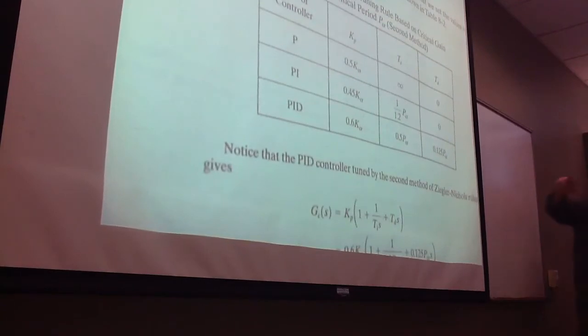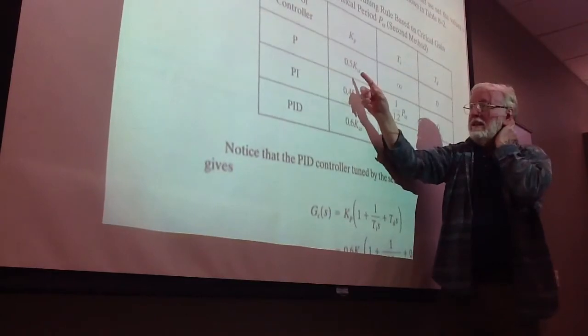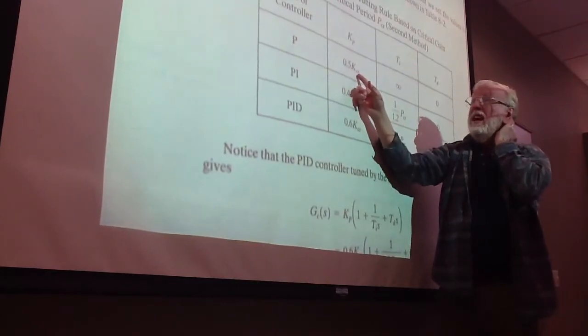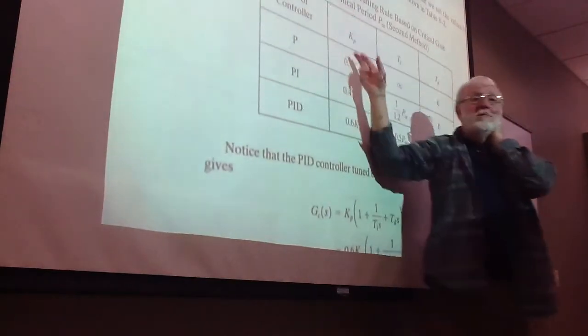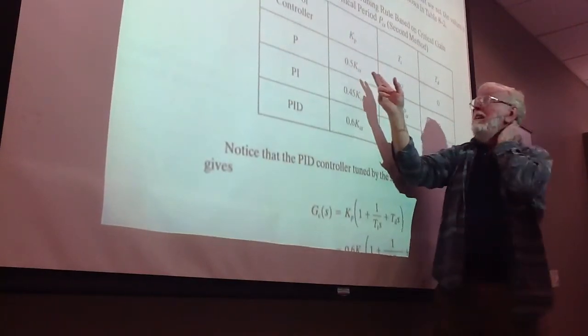So don't even look at that. All right. So the formula for the proportional controller gain is one-half of whatever you found out here. Boy, is that an easy formula.